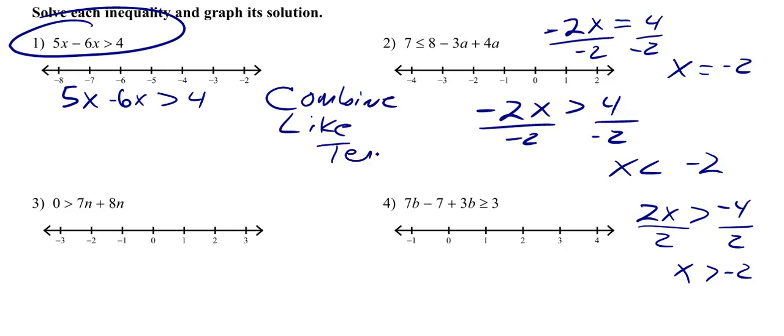Remember, your like terms are constants, like 3 and 5. Or they're numbers with the same variable raised to the same power. So 5x minus 6x are like terms because they've got the same variable raised to the same power.